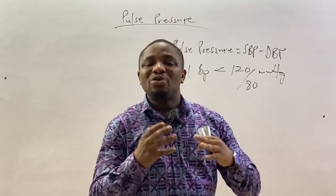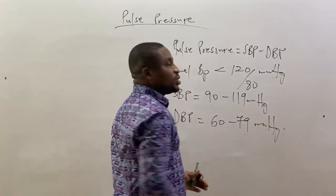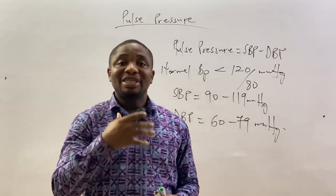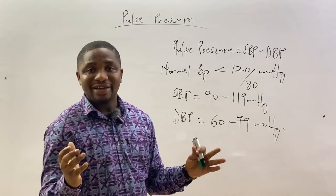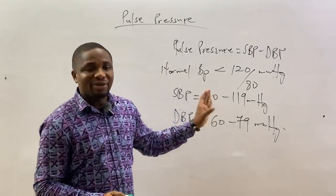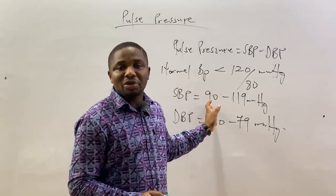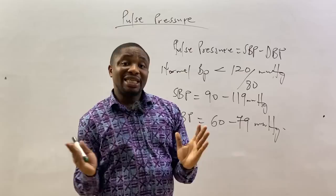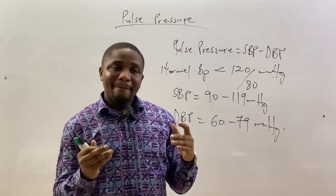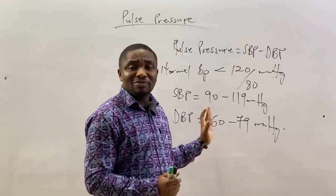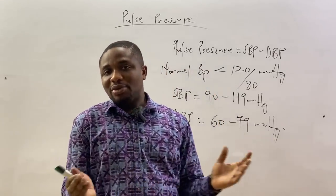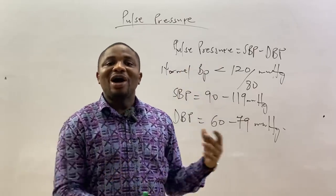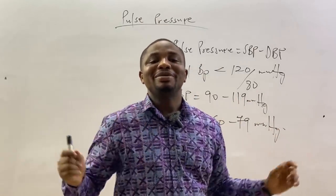So there are ranges. The systolic blood pressure normally ranges from 90 to 119 mmHg, and the diastolic blood pressure ranges from 60 to 79 mmHg. That is why we say that when the systolic goes below 90 mmHg and/or the diastolic blood pressure goes below 60 mmHg, the patient is experiencing shock or hypotension.